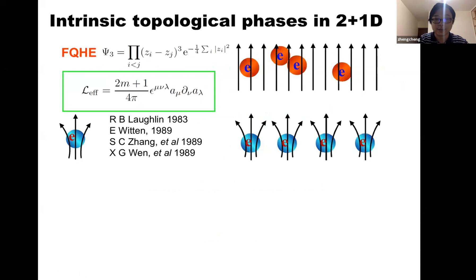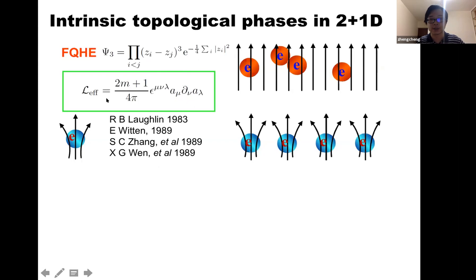Let me start from the two plus one D case. I believe most of you with a condensed matter background should have heard about the story of the fractional quantum Hall effect. As first proposed by Bob Laughlin, the fractional quantum Hall state ground state wave function can be written in the Laughlin form. This Laughlin wave function describes an anyon gas, and equivalently it can be written in terms of the very famous effective field theory: the so-called Chern-Simons theory. For example, the Laughlin state with filling fraction one over two M plus one can be described by the U(1) Chern-Simons theory with level two M plus one.